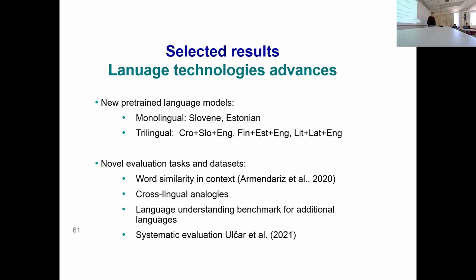In the project, we built several pre-trained language models. Even though huge multilingual models like mBERT and XLMR exist, it turns out that monolingual models trained on more domain-specific data perform better. We also developed a range of evaluation tasks, including analogy tests — for example, what Athens is to Greece, Ljubljana is to Slovenia. For cross-lingual testing, we put pairs in different languages to see if we have a good multilingual representation.